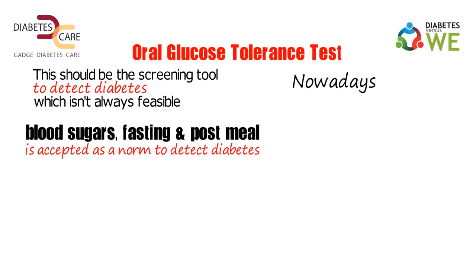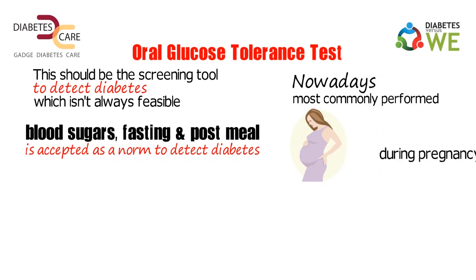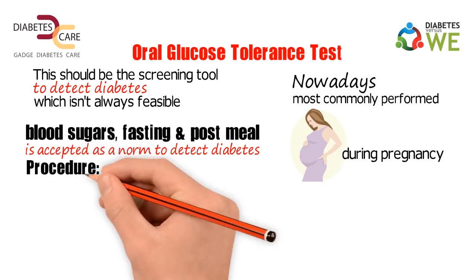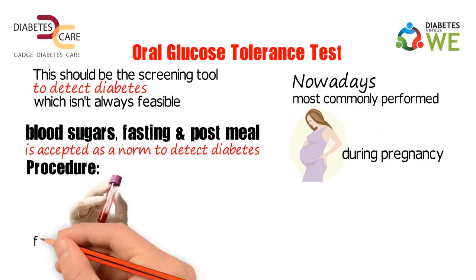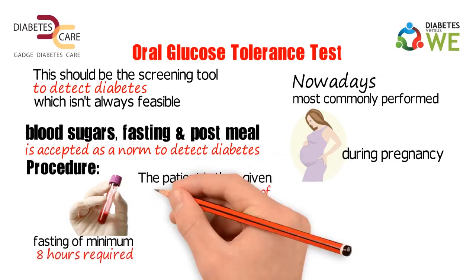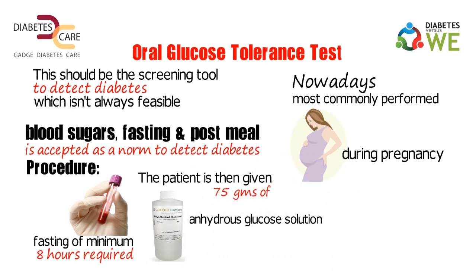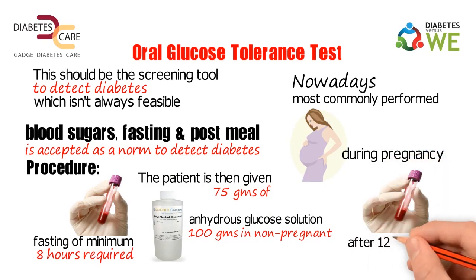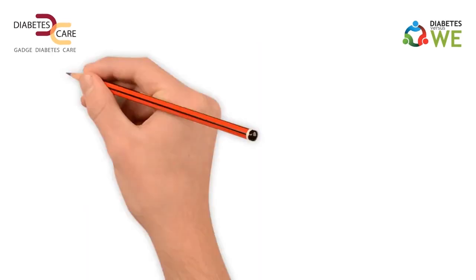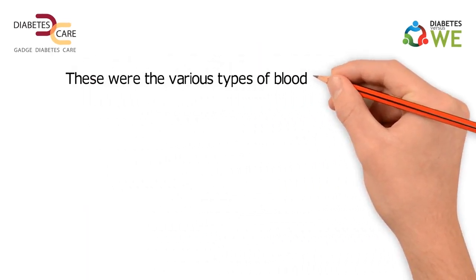Nowadays, this test is most commonly performed during pregnancy. Procedure: A blood sample is drawn at the start, with a minimum fast of 8 hours required. The patient is then given 75 grams of anhydrous glucose solution — 100 grams in non-pregnant patients — to drink. Blood is drawn after 120 minutes of glucose administration.